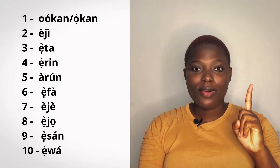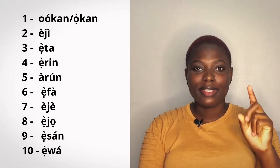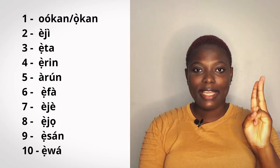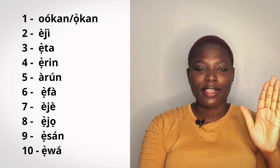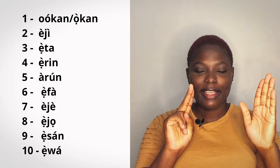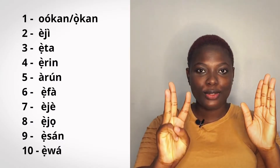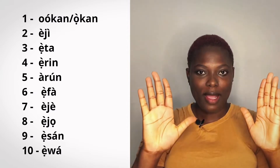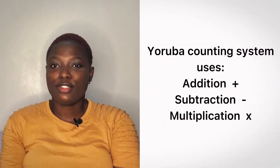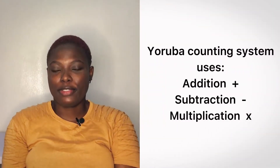First of all, let's count from 1 to 10. Those are the first 10. Your Yoruba counting system makes use of addition, subtraction, and multiplication.